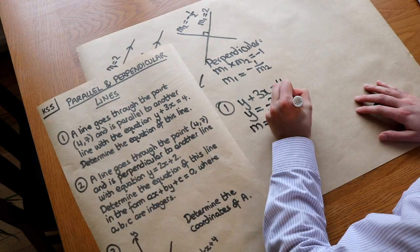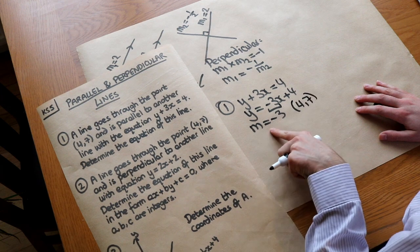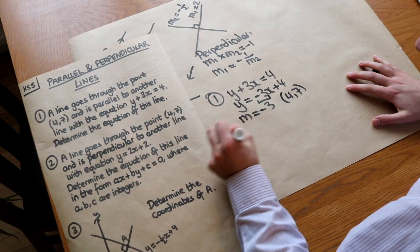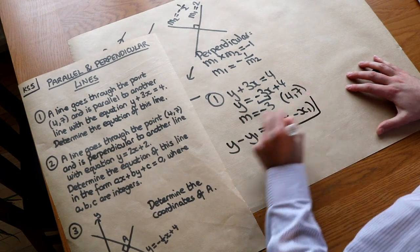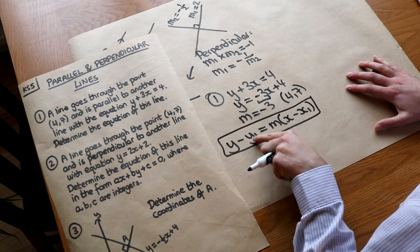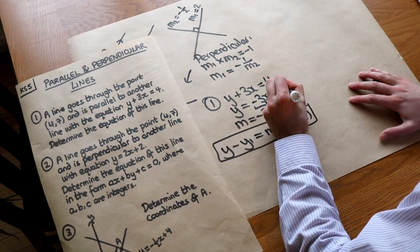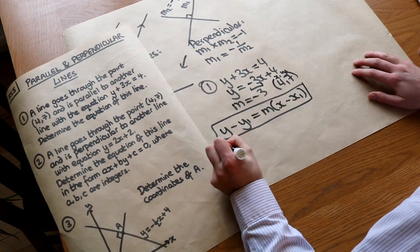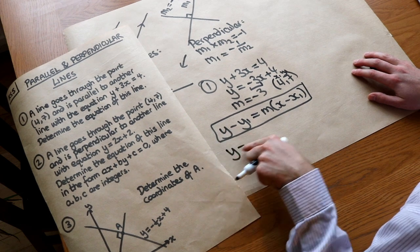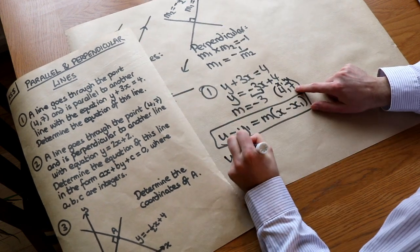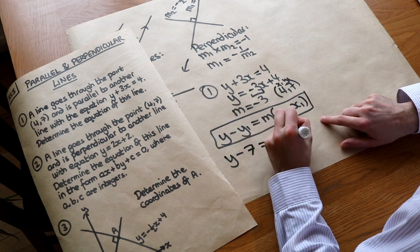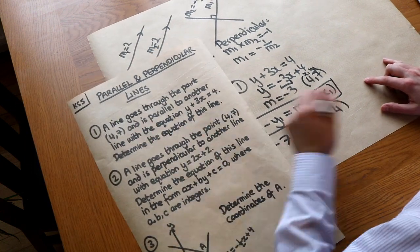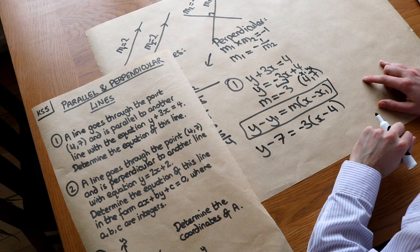We know the line passes through the point (4, 7) and has gradient minus three. Since we have a fixed point and a gradient, we use y minus y1 equals m brackets x minus x1, where x1 and y1 is the fixed point. Substituting in: y minus 7 equals minus 3 brackets x minus 4. The question doesn't ask for a particular form, so we can leave it unsimplified like that.